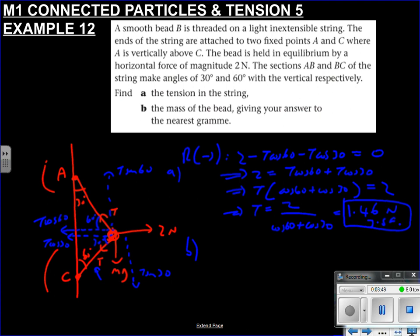So part B, mass of the bead. Find the mass of the bead, giving your answer to the nearest gram. So this time, of course, we're going to have to resolve upwards. What force is it going up? Well, there's T sin 60. Anything opposing it? Absolutely. So MG minus our T sin 30. And again, this equals zero. We're trying to find M, so let's rearrange.